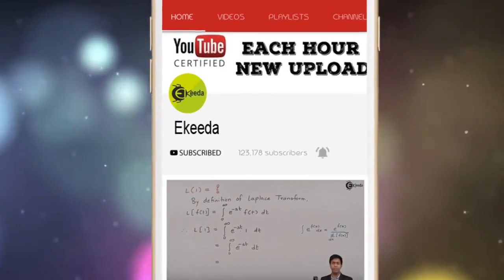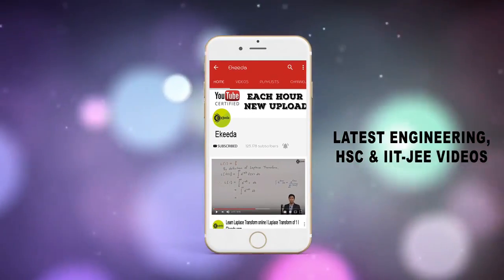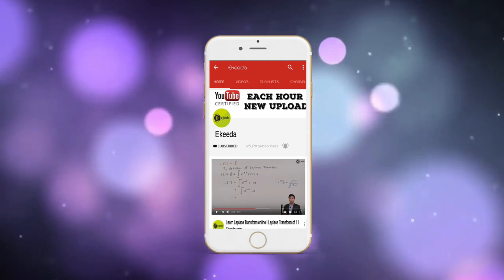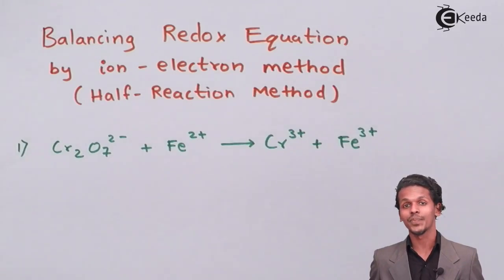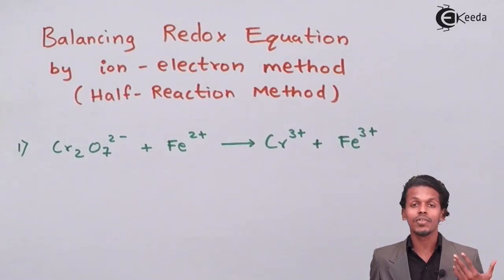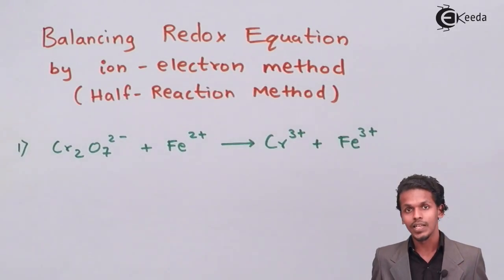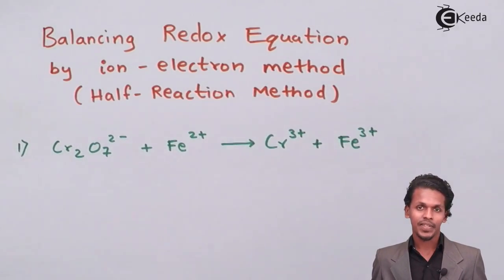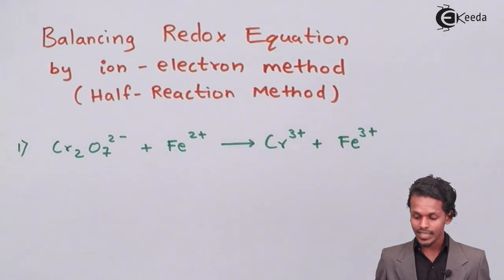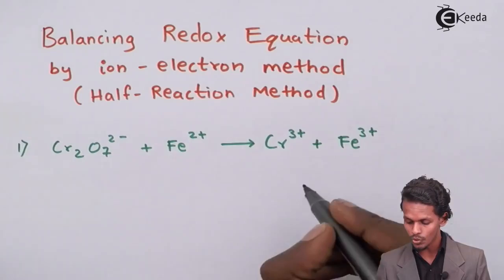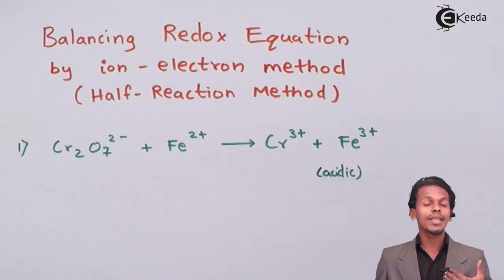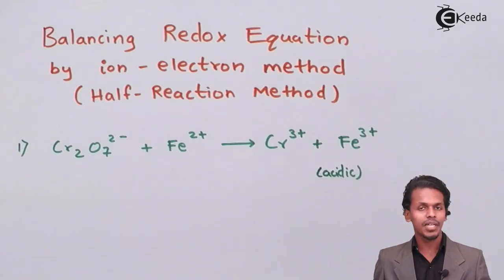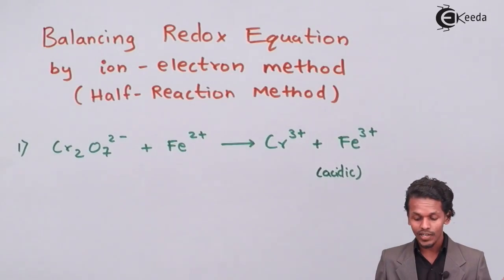Do subscribe to Ikeda channel and press the bell icon to get updates about the latest engineering, HSE, and IIT JEE Main and Advanced videos. As present on the screen, there is an equation which we have to balance using the ion-electron method. This is like the previous one, but we are going to separate the equations. They have provided us the equation and specified that this should be in acidic medium. The first step is common for every method — acid medium, basic medium, and ion-electron method.